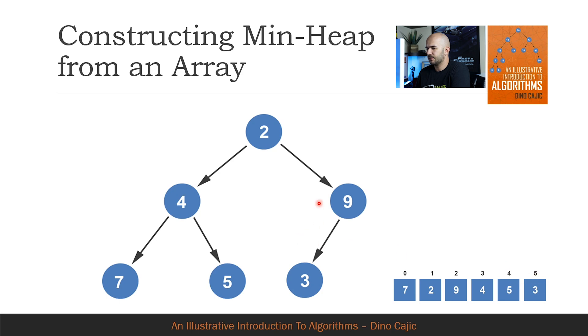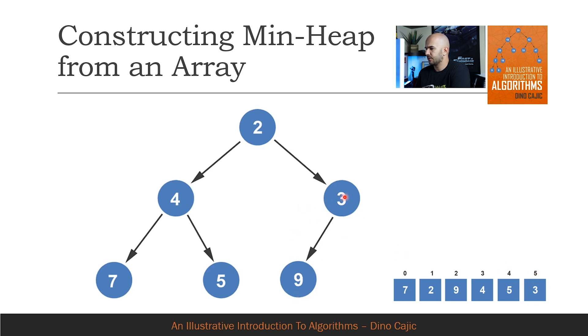And finally, element 3 is added. Since element 3 is smaller than element 9, the two nodes are swapped. Element 3 is also compared to element 2. Since element 3 is larger than element 2, the two nodes remain in their current positions.